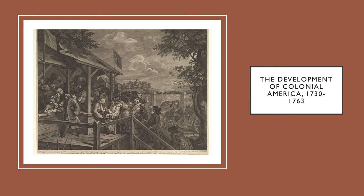Welcome back to History 103. In this lecture, we will focus on the development of political culture in the colonies. The focus will be on British political history, and we'll cross the pond to the colonies and see how the people within the colonies were influenced by ideas that were emerging in places like England and Europe. As you can see in this picture from the 1700s dealing with voting, we have to understand that this concept of voting is fairly modern. The title of this lecture is The Development of Colonial America, focusing between 1730 and 1763, which is basically what the book chapter focuses on.